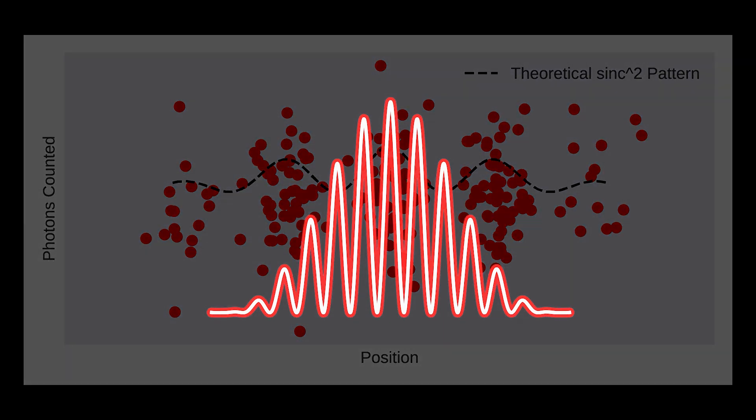This raises an eerie question: how does each photon know the path the previous photons took? What kind of conspiracy is this? The truth is chilling: the photon is neither purely a particle nor purely a wave. It is something else entirely, something that defies our classical understanding.